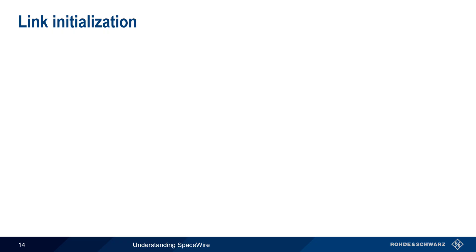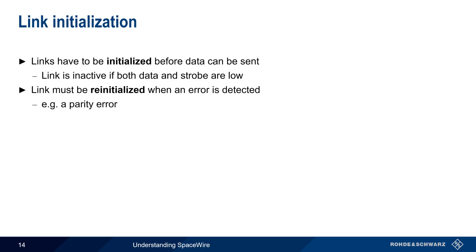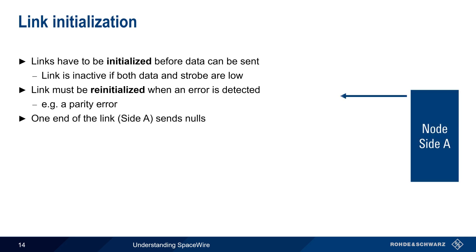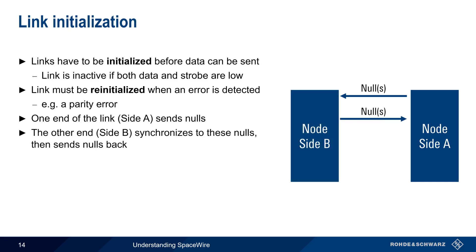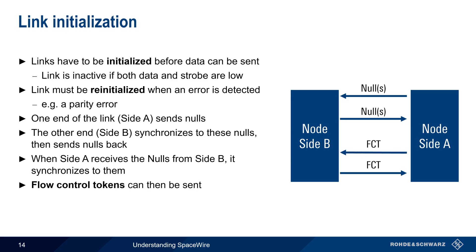Let's first walk through link initialization. SpaceWire has a link initialization process that must be performed before data can be sent. Links are considered inactive or idle when both the data and the strobe signals are low. This process is also used to reinitialize the link after various types of errors, such as when a parity error is detected. The initialization procedure is very simple: one side (side A) sends nulls to the other side (side B), which synchronizes to these nulls and sends nulls back. Side A then synchronizes with the nulls it received from side B, after which both sides can begin sending each other flow control tokens.